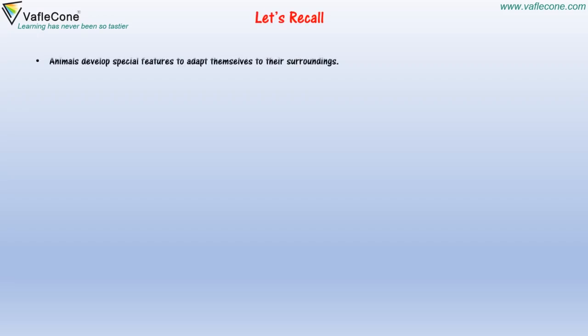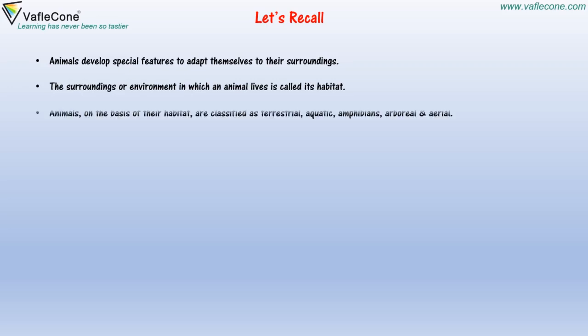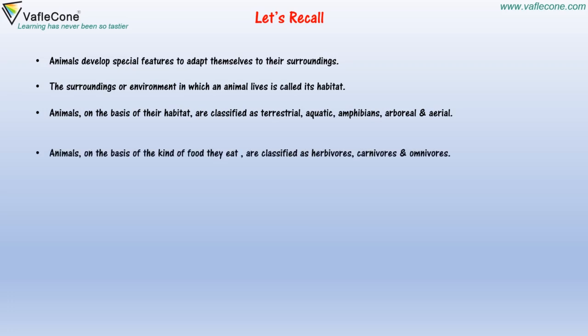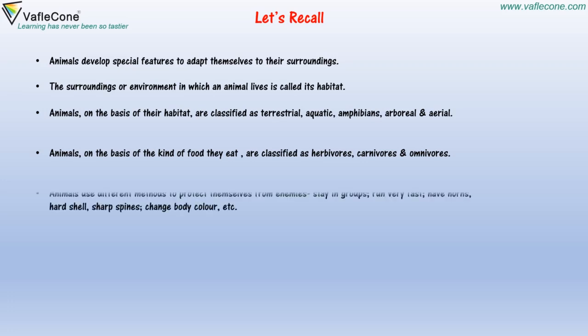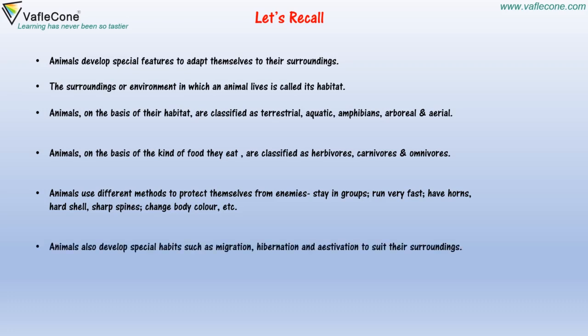Let's recall: Animals develop special features to adapt themselves to their surroundings. The environment in which an animal lives is called its habitat. Animals are classified by habitat as terrestrial, aquatic, amphibians, arboreal, and aerial. By food type, they are classified as herbivorous, carnivorous, and omnivorous. Animals protect themselves by staying in groups, running fast, having horns, hard shells, sharp spines, or changing body color. They also develop special habits such as migration, hibernation, and aestivation.